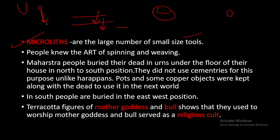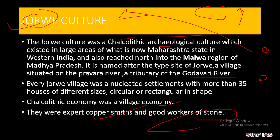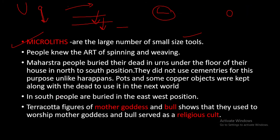यह कोई symmetry वगैरह का use नहीं करते थे इस purpose के लिए, जैसे कि Harappans किया करते थे। Pots और कुछ दूसरे copper objects को इनके साथ रखा जाता था — इसलिए रखा जाता था कि ऐसा मानते थे कि यह दूसरी दुनिया में जा रहे हैं। अगर हम South India के लोगों की बात करें तो South India के लोग East-West position में रखते थे। Maharashtra वाले North-South और South India वाले East-West।